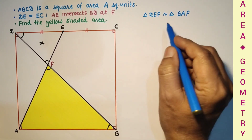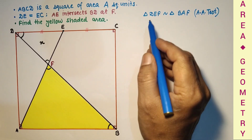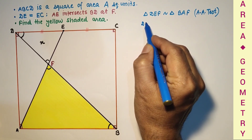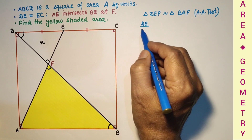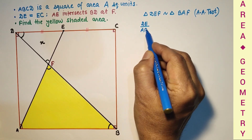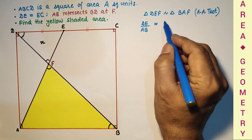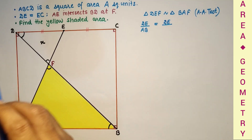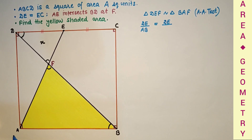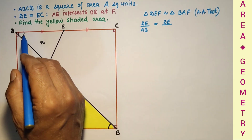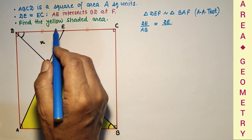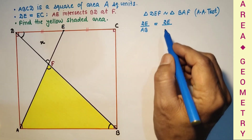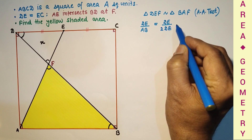Triangle DEF is similar to triangle BAF by the AA test of similarity, and therefore corresponding sides of these two similar triangles are proportional. So DE over AB equals DE upon AB. AB is twice of DE because AB is equal to DC, and DE is equal to EC, so DE equals half of DC. That means AB is equal to twice of DE, giving the ratio DE/AB equal to one half.